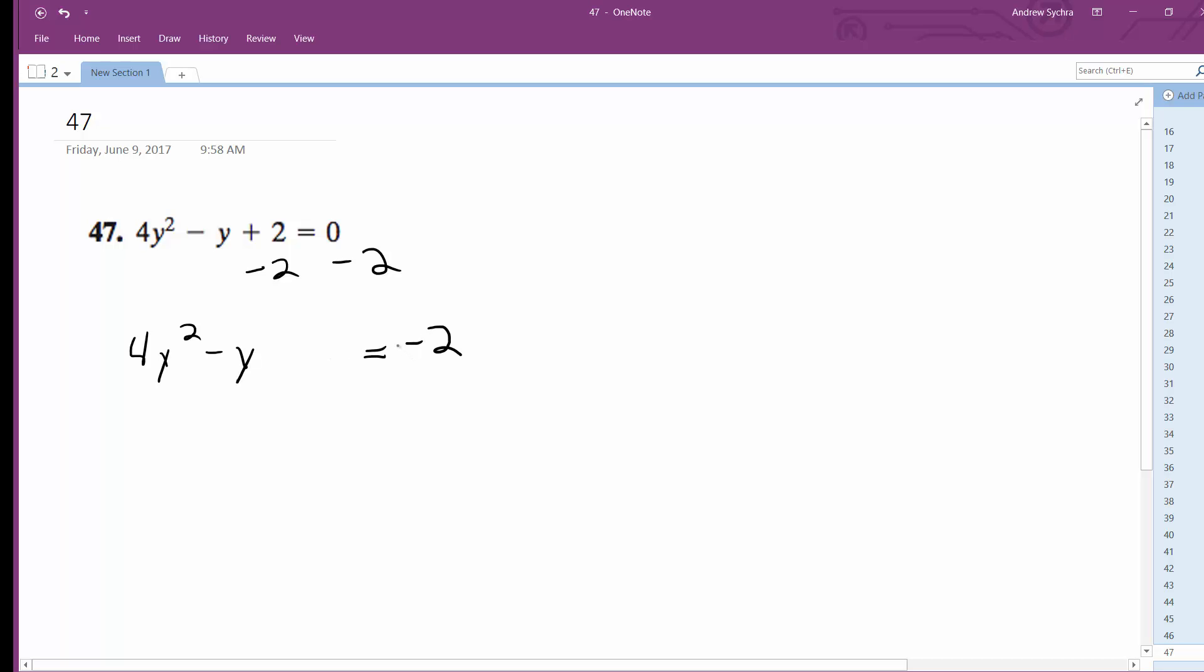There's a couple ways you can do this. You can use the quadratic formula. I'm going to complete the square so I get 4 on the outside, I get y squared minus 1 over 4y.